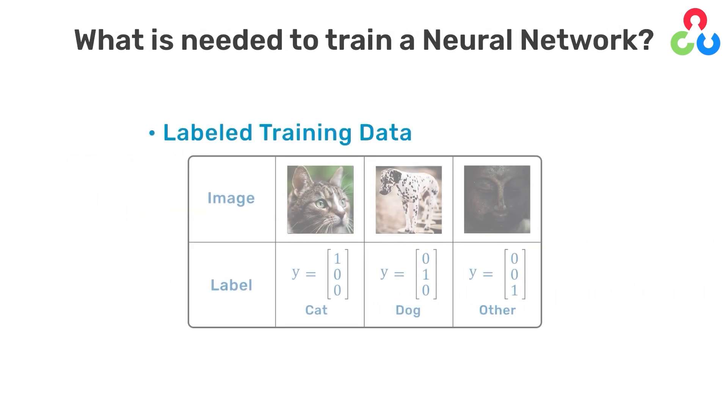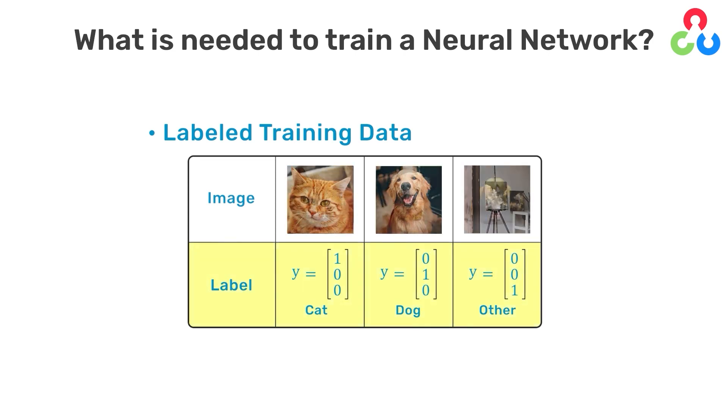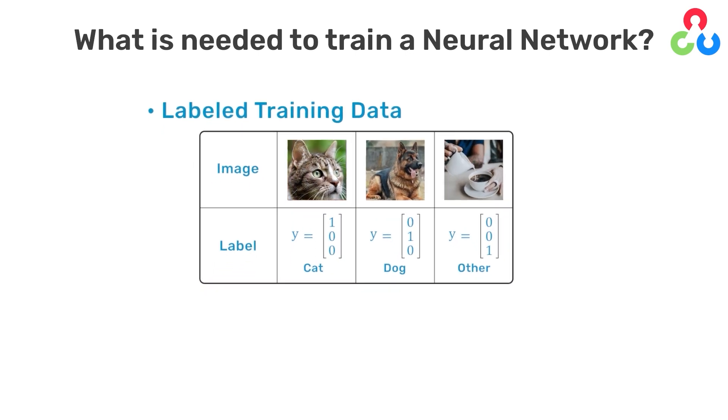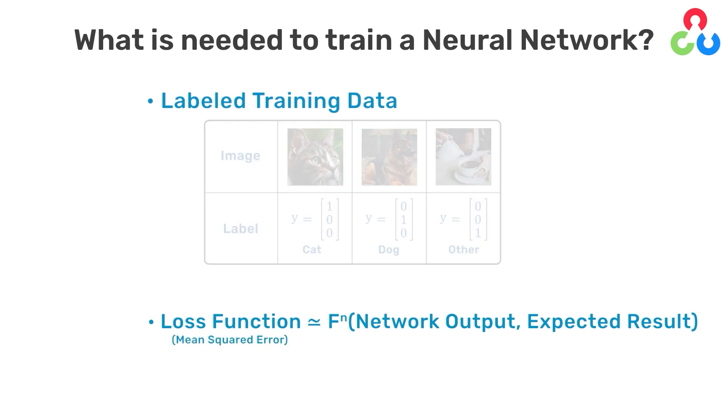Labeled training data that consists of thousands of images from each class along with their associated class labels. We also need to define a cost function, also referred to as a loss function, which is a numerical computation that quantifies the error between the network output and the expected result. There are many different types of loss functions we can use, but in this example, we'll use a loss function called mean squared error.